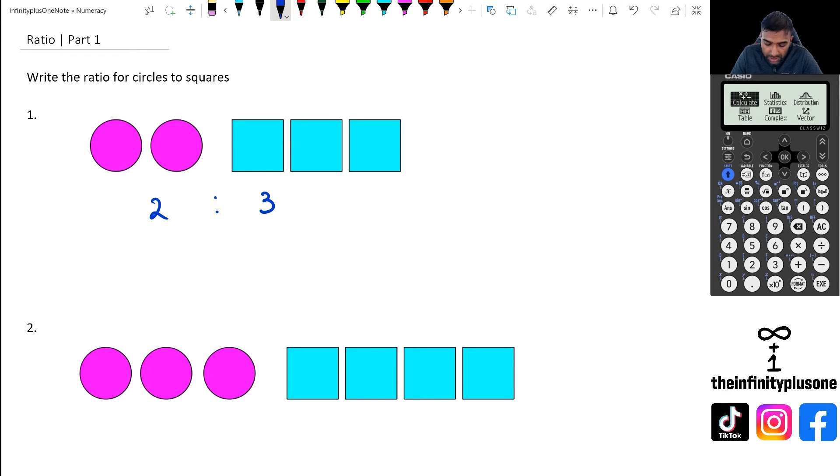Of course you could actually blow this up a bit because if you think about it, for every four circles you're going to end up with six squares, and so on. So if I have eight circles, then I am going to end up with 12 squares. But the simplified version of this, in this case, we're going to say it's actually 2 is to 3.